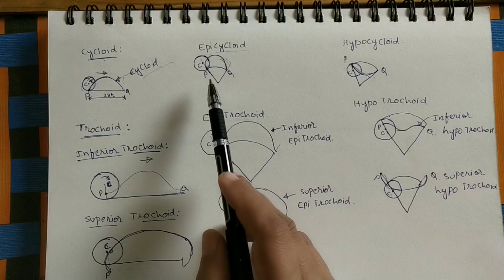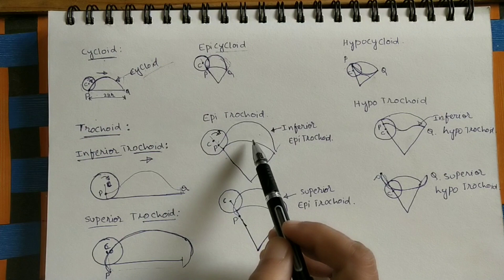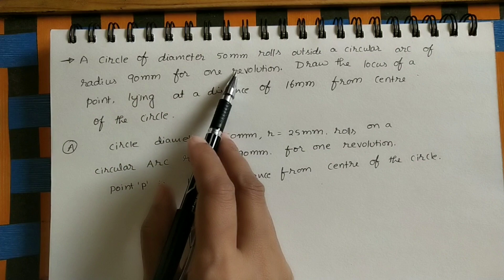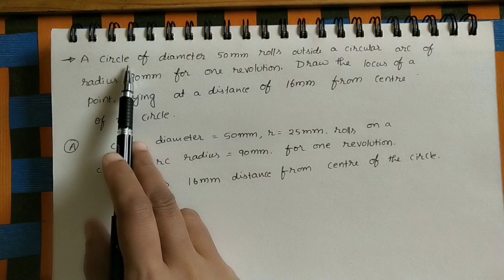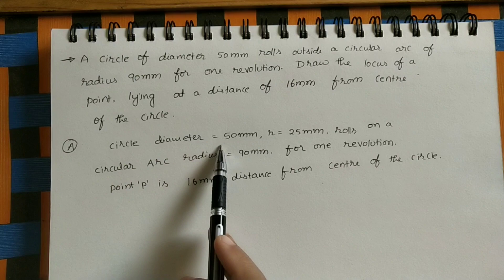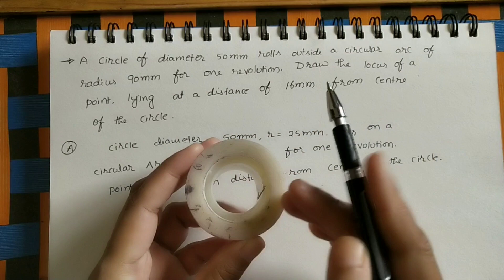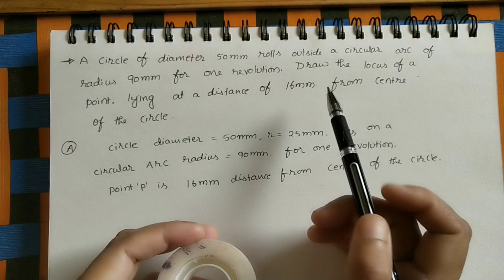Let us take the given data for doing the inferior epitrochoid. A circle of diameter 50 mm rolls outside a circular arc of radius 90 mm. The rolling circle diameter is 50 mm. Circle diameter is 50 mm, radius is 25 mm. It is rolling on the arc of radius 90 mm for one revolution, outside a circular arc.